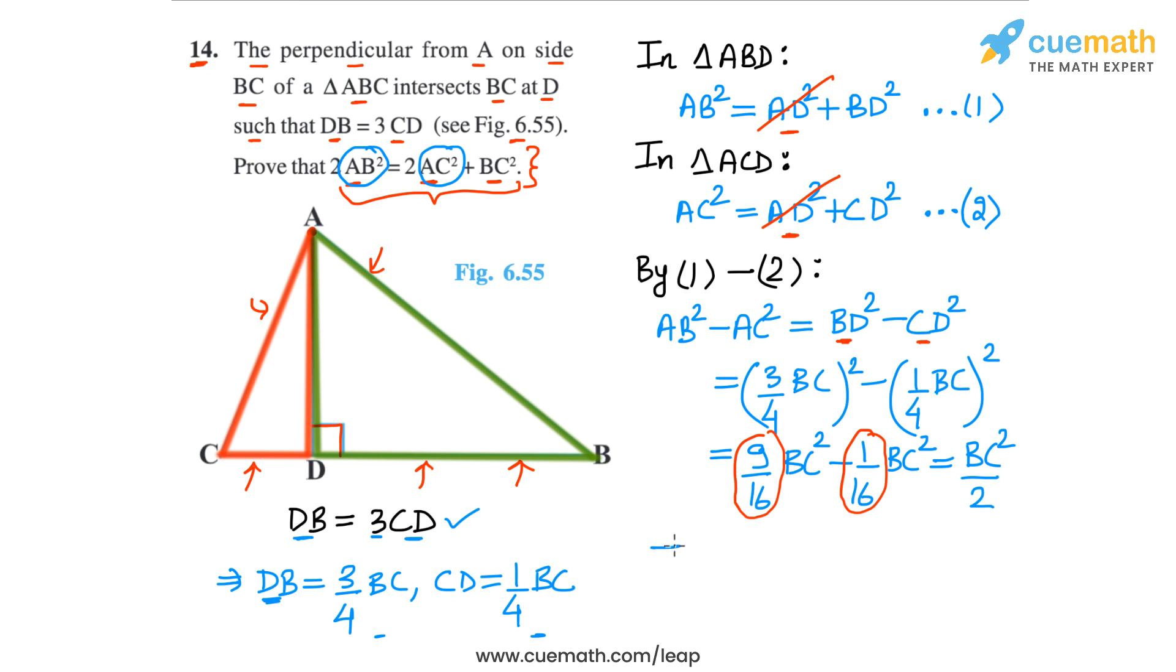From here we get AB square is equal to AC square plus BC square by 2. Now if you multiply 2 on both sides, we will get 2AB square is equal to 2AC square plus BC square.